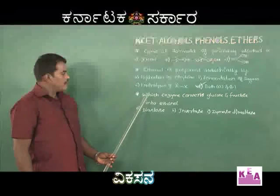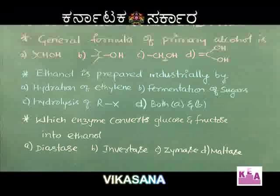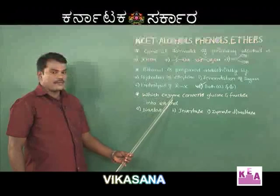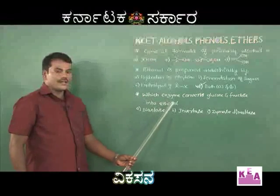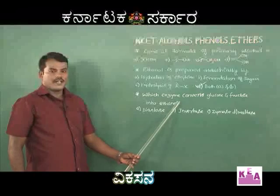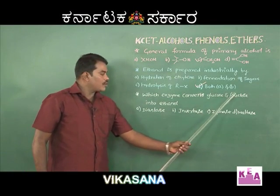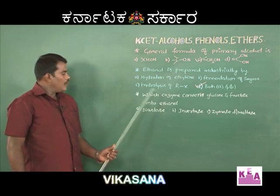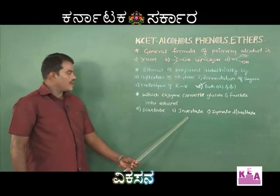Next question: which enzyme converts both glucose and fructose into ethanol? The options are diastase, invertase, zymase, and maltase.